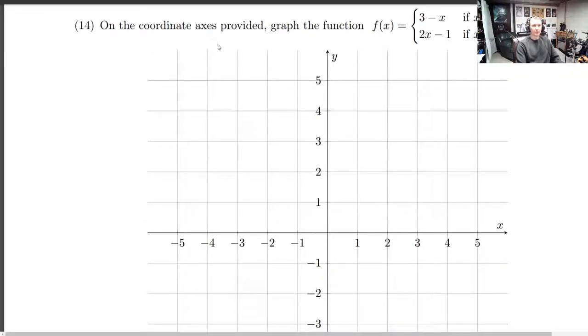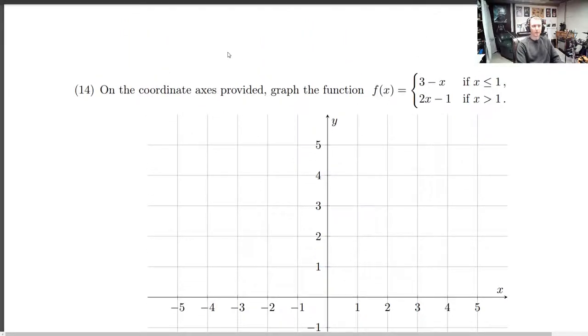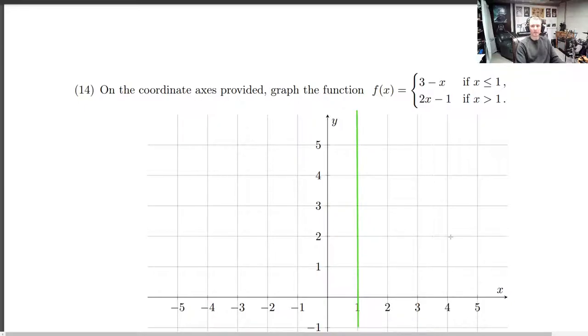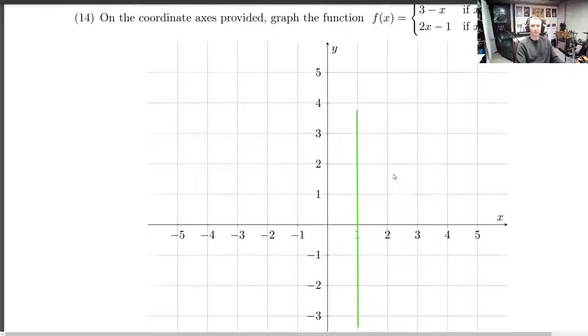On the coordinate axes provided, graph the function 3 minus x if x is less than or equal to 1, and 2x plus 1. The function is piecewise. It's this 3 minus x if x is less than or equal to 1, and it's this 2x minus 1 if x is bigger than 1. So right away I'm going to put in a line at 1, at x equals 1, because this is sort of our break point.